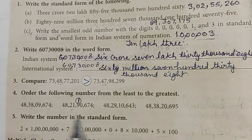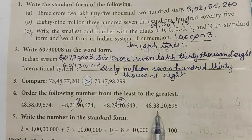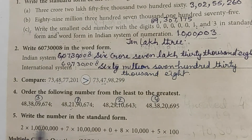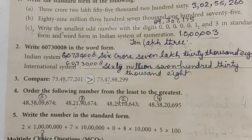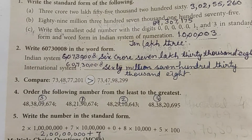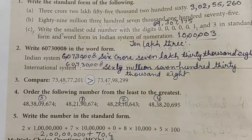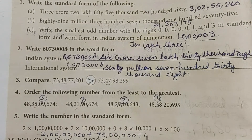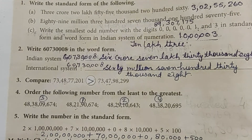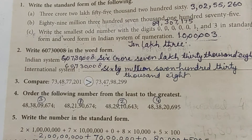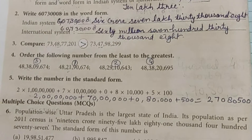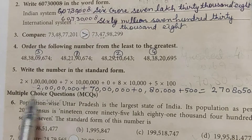Now write the number in standard form: 2 plus 70 plus 80,000 plus 500 is equal to 2 70 805 — so the standard form is 270805.